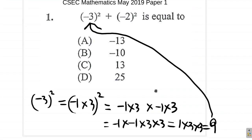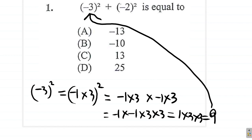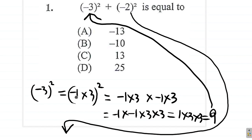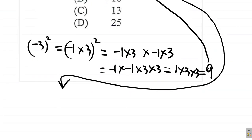Alright. Now, what about the negative 2 squared? The negative 2 squared means negative 2 times negative 2. Negative 2 means the same as negative 1 times 2. You see that?